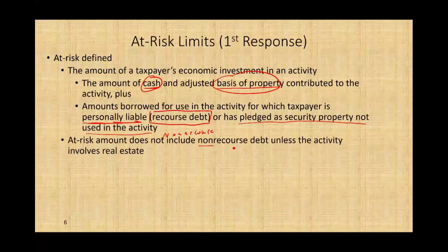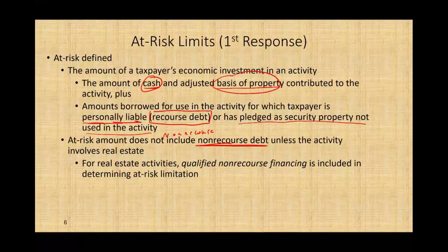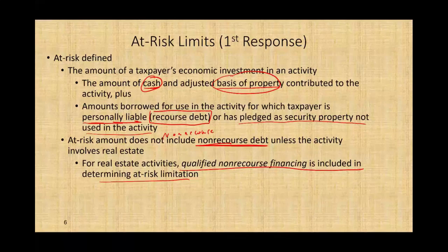At-risk amount does not include non-recourse debt, unless the activity is a real estate activity with qualified non-recourse financing — in that case it's included in determining the at-risk limitation. So if you're in real estate with qualified financing, although it's non-recourse, there's an exception and it can still count. That's the first response to the at-risk limit: you can only deduct what you are at risk for.